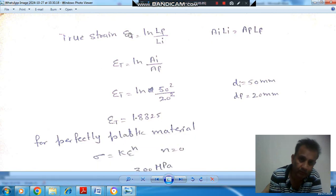So here, the formula for the true strain is ln(Lf/Li), where Lf is final length and Li is initial length. During forming, the volume remains same. So Ai × Li, initial volume, is equal to final volume. So Lf/Li is Ai/Af.